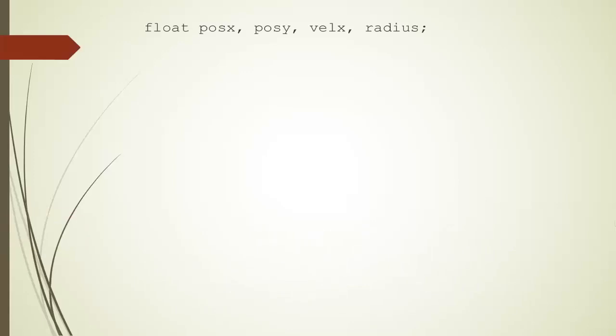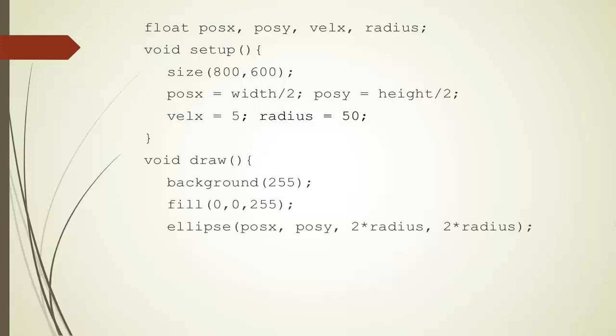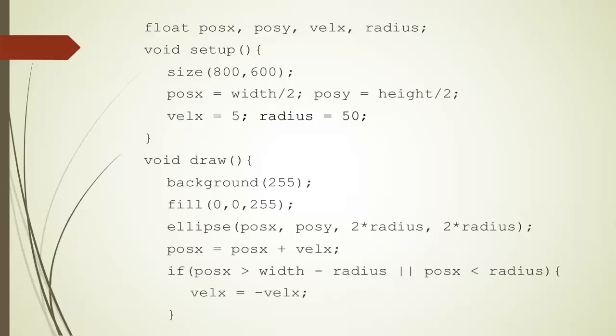In the previous videos, we talked about how to make a ball bounce on the screen. We created some variables that represent the position, the velocity, and the radius of the ball. Then we initialized those variables in the setup method and also created a window of a certain size. Then in the draw method, we drew the background, then we drew the bar, then we moved the bar by a certain amount, and then if the bar passes the right edge or the left edge, we change the direction of the bar so that it can bounce back and forth. This draw method runs continuously, 60 times a second, creating the illusion of animation.